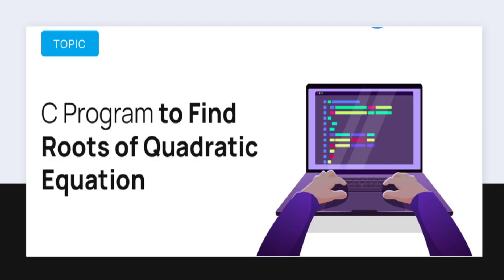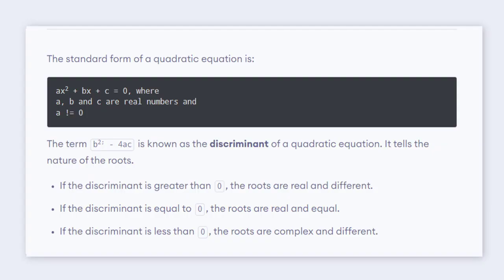In this section we are going to write a C program to find the roots of a quadratic equation. The standard form of a quadratic equation is ax squared plus bx plus c equals 0, where a, b, c are real numbers and a is not equal to 0. The term b squared minus 4ac is